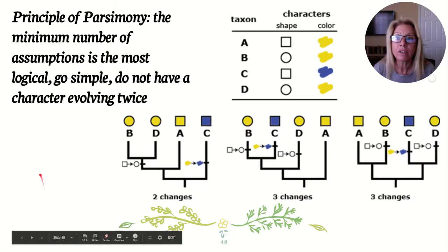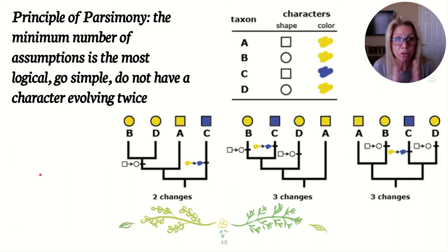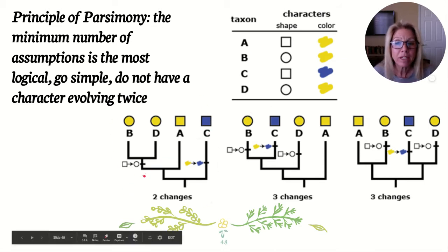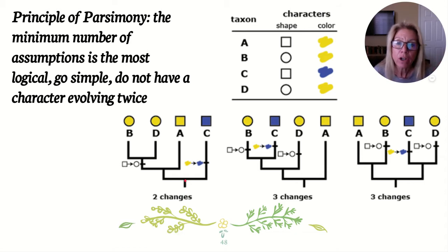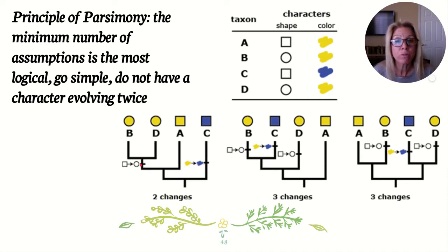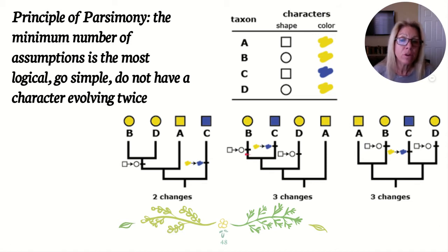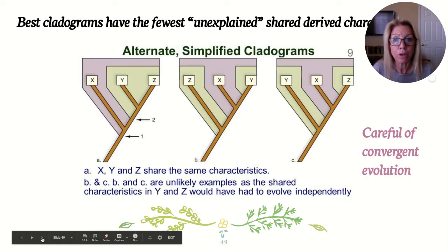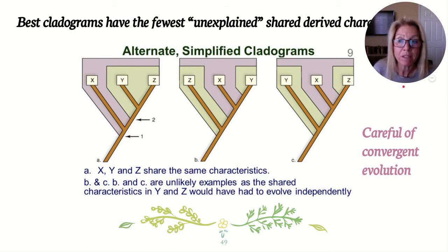The principle of parsimony says: go simple — the simpler the better. For example, with ancestral shape and color: if everyone started as a blue square and only one change was needed, that's two total changes. If set up another way, you get three changes. Parsimony says go with the simplest arrangement — that's the most likely way it would occur.